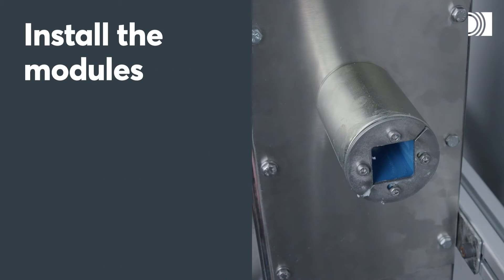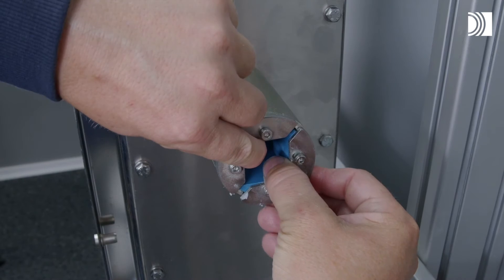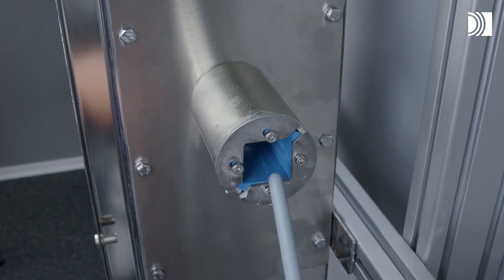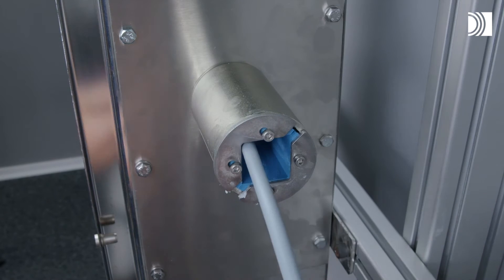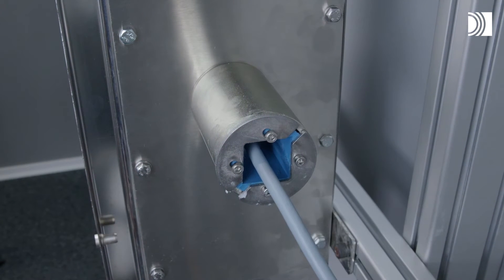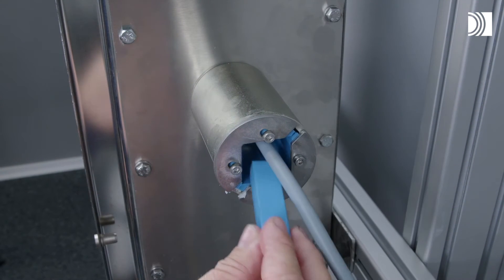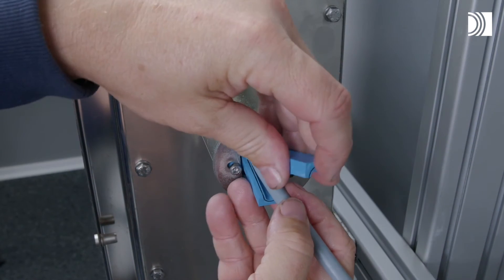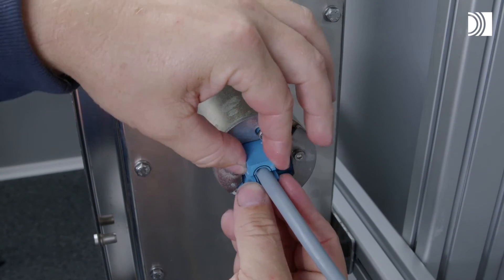Install the modules. Push the front fittings to the sides. Route the cable through. Insert the modules according to your packing plan. The cables shall be parallel to the sleeve.